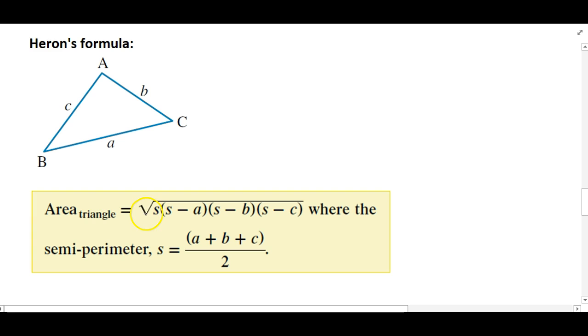And for the area, you have to use this one here. It's going to be the square root of everything under here. So it's the semi-perimeter times all this stuff in the brackets. If you have this written down in your formula book, you will just have to remember when to use it.